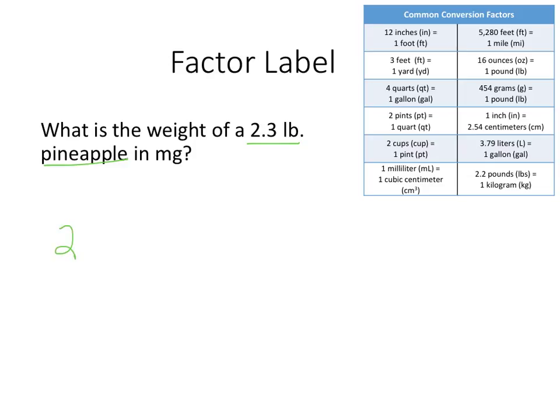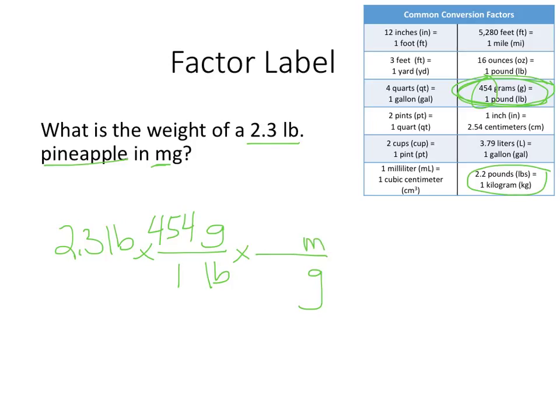So we're going to start with the thing we know, 2.3 pounds, and we're going to milligrams. I see pounds in this conversion chart here with kilograms and I also see pounds with grams. Either one of those gets me to metric so either one of those will get me to milligrams. I'm going to try this top one because grams to milligrams seems simpler to me. So pounds is going to go on the bottom so that it'll cancel. Grams is going to go on the top. The equivalency 454 goes with grams. One goes with pounds. Problem is that's not milligrams. I need one more step.